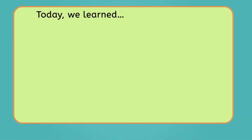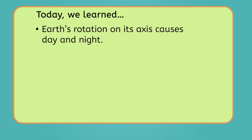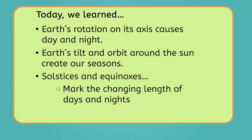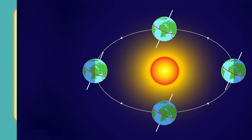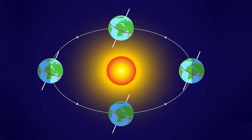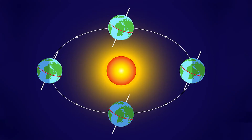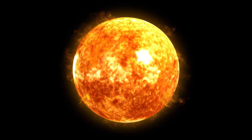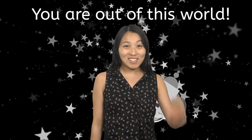Let's quickly review what we've learned today. Earth's rotation on its axis causes day and night, while its tilt and orbit around the Sun create our seasons. Solstices and equinoxes mark the changing lengths of days and nights and the shifts in our seasons. You can learn more about how Earth plays a major role in our days, nights, and seasons in the additional activities for this lesson. Next time we'll be learning about our solar system's home star, the Sun. Until then, keep looking up at the stars, and remember — you are out of this world! See you soon!